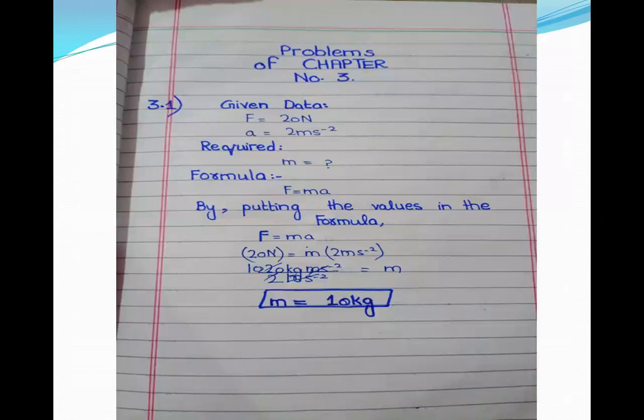Problem number one. The statement of numerical 3.1 is: a force of 20 Newtons moves a body with an acceleration of 2 meters per second squared. We have a force of 20 Newton and acceleration is 2 meters per second squared.